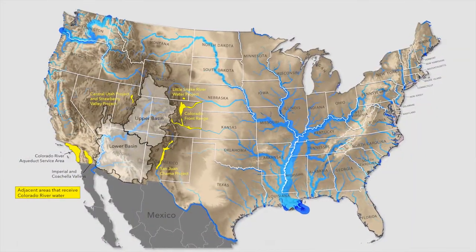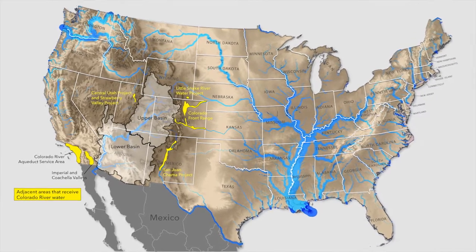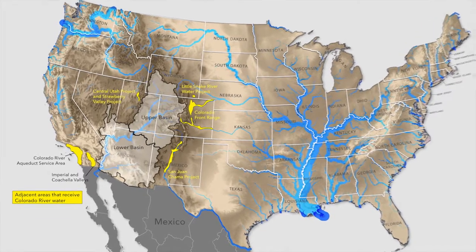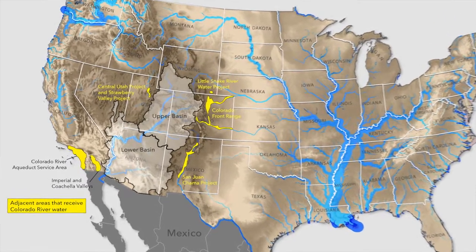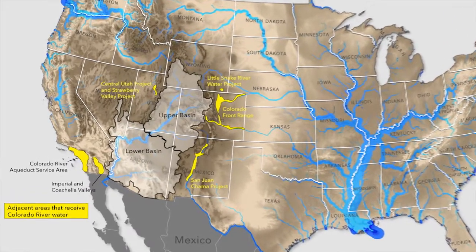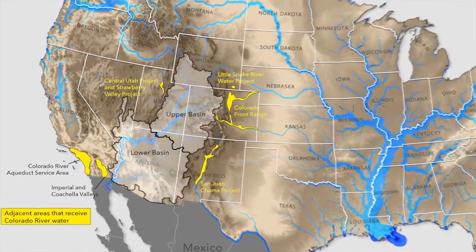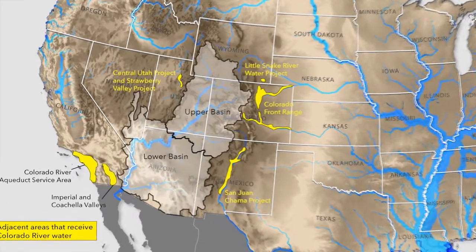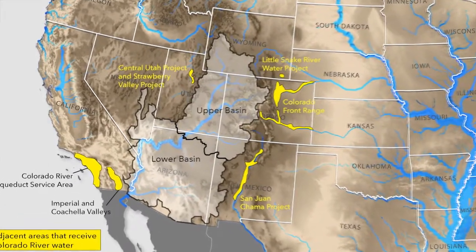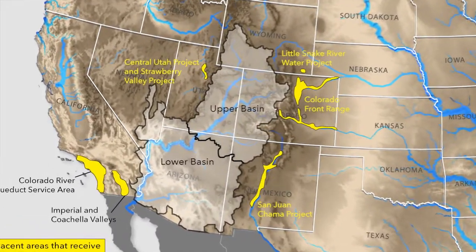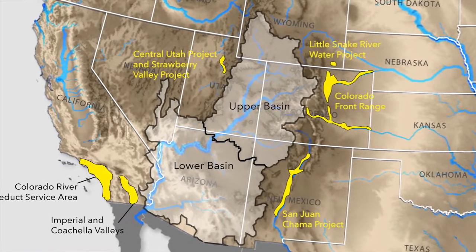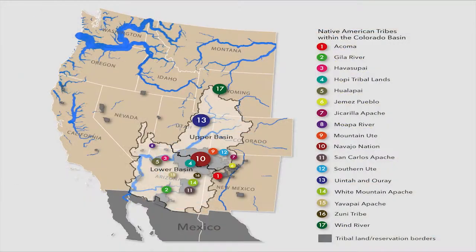The Colorado River Basin includes parts of seven U.S. states — Wyoming, Colorado, Utah, New Mexico, Arizona, Nevada, and California — as well as two Mexican states, Baja California and Sonora. The Colorado River Basin is also home to many Indian reservations and other tribal lands, as shown on the map.